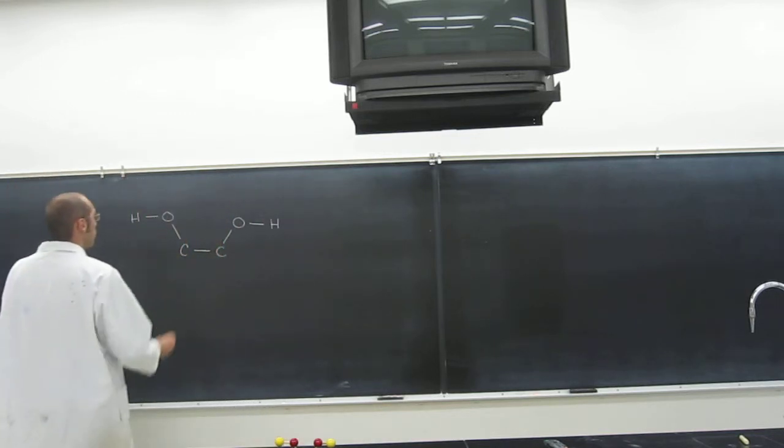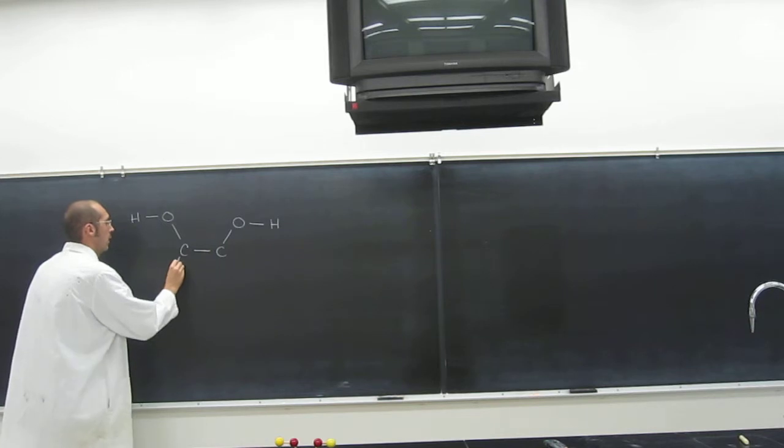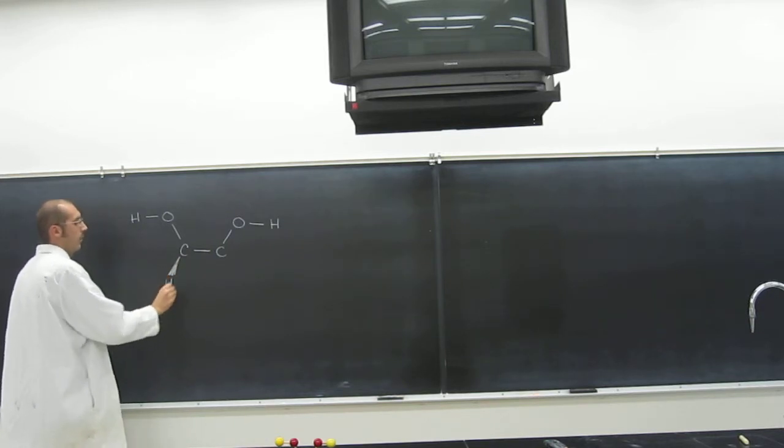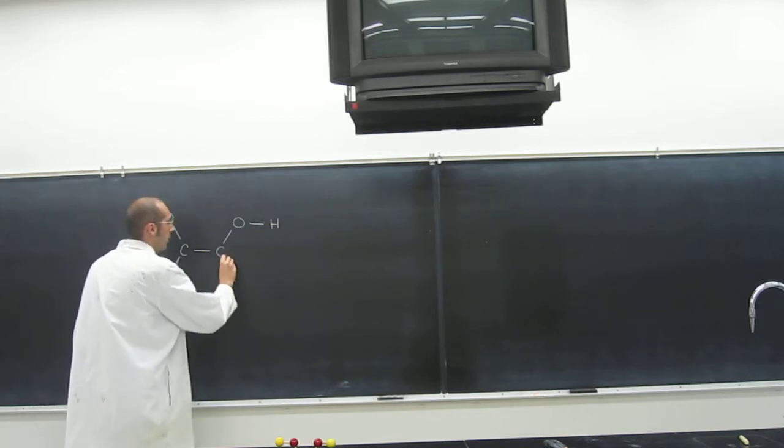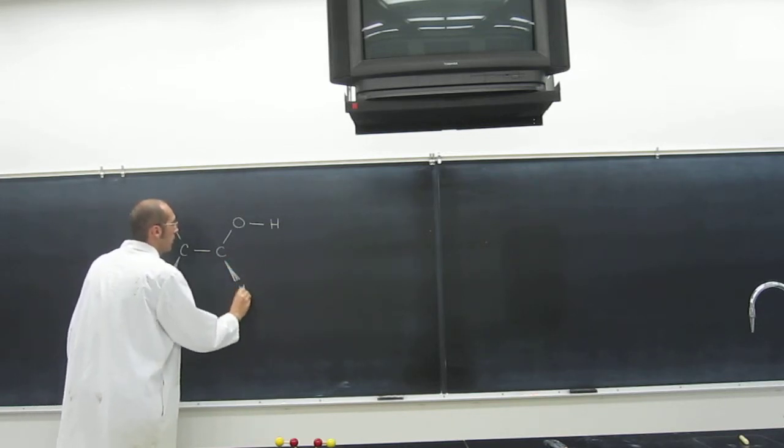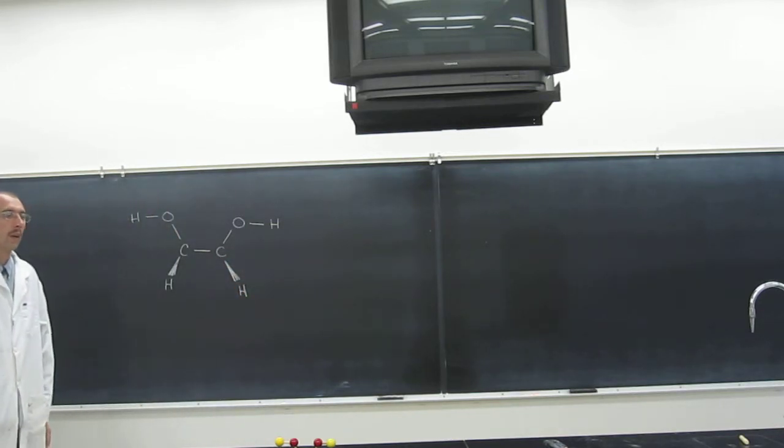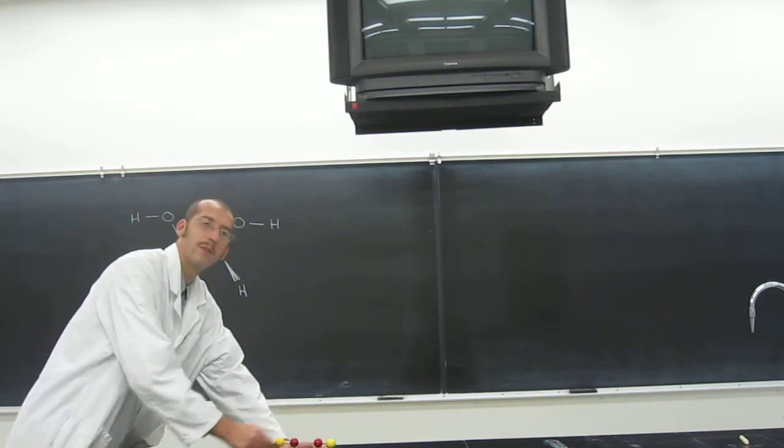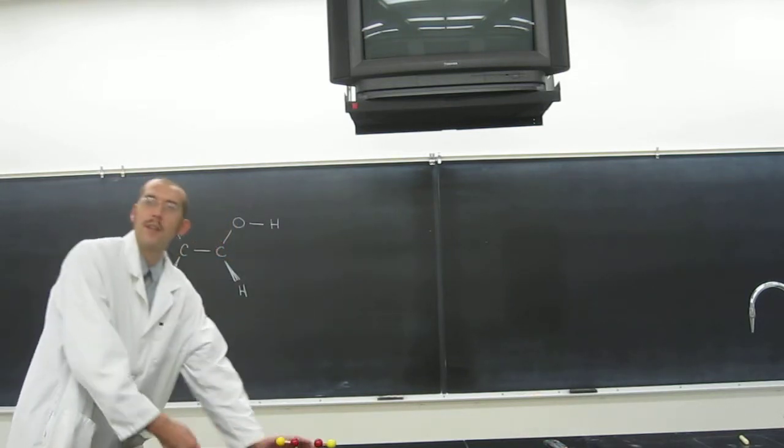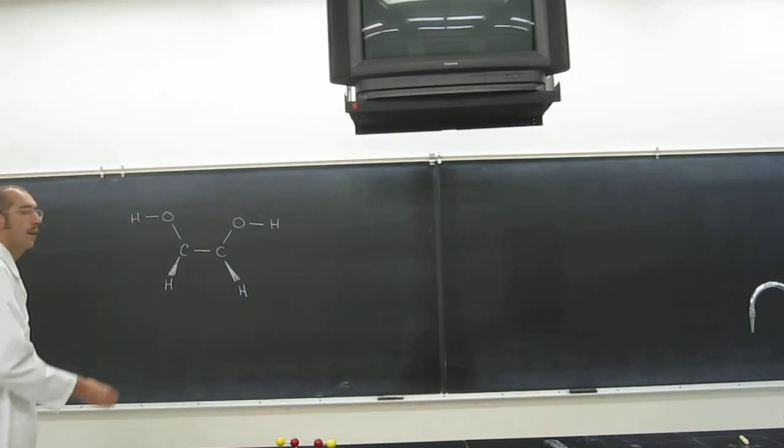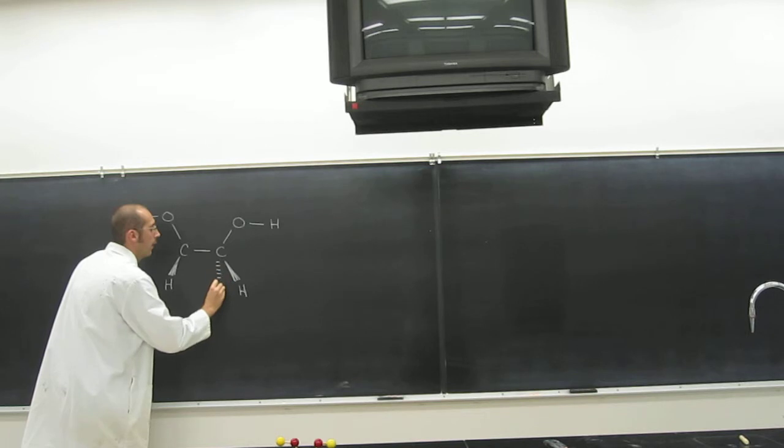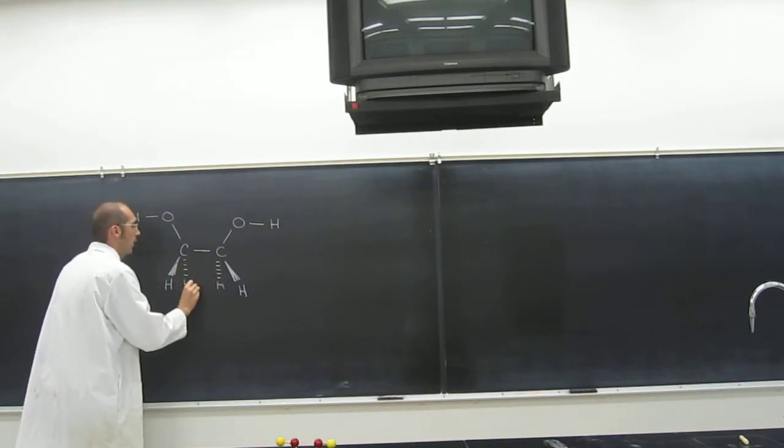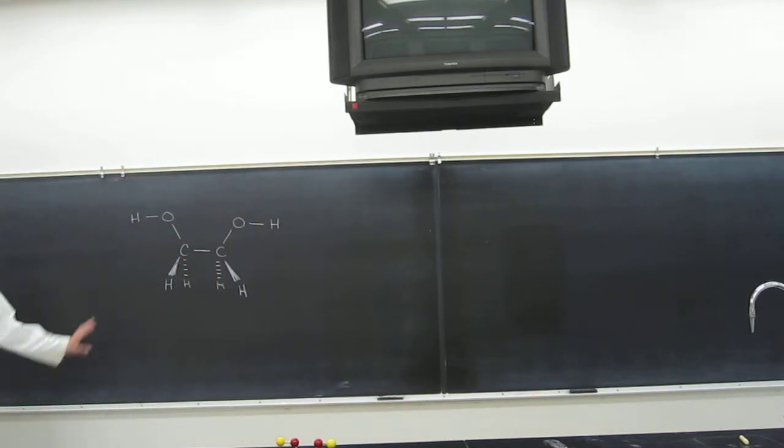So let's draw those two hydrogen atoms. Remember, the wedge is how we show something coming towards us. What about these two hydrogens here that are kind of hard for you to see because they're going back? And how do we do those? Hash lines, right?